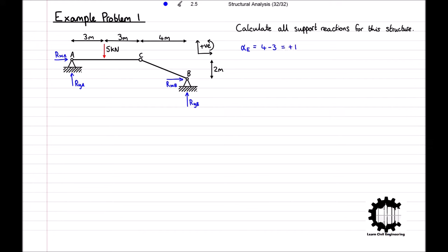Working out the internal indeterminacy, we have one hinge at point C, which is linking two members, so the degree of internal indeterminacy is equal to minus one, i.e. the structure is internally unstable. However, summing the external and internal degrees of indeterminacy, we get one minus one, which equals zero. So overall, the structure is stable and we can calculate all four support reactions.